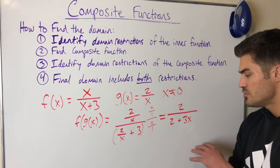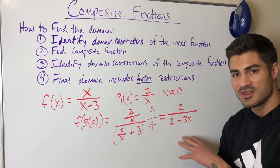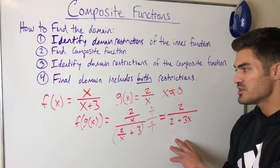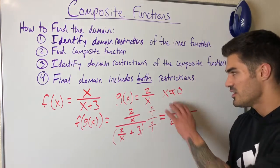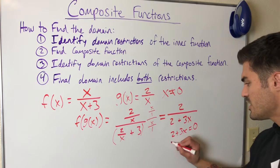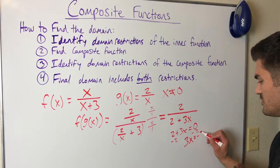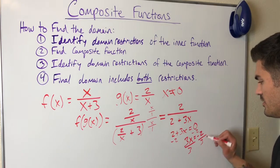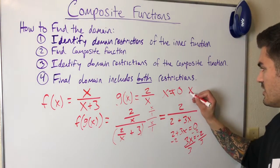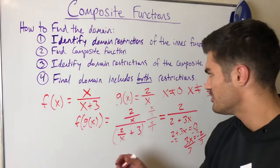So the composite function simplifies to 2 over (3x + 2). Now I potentially have zero in the denominator, so I set the denominator equal to zero and solve: 2 + 3x = 0, subtract 2 from both sides to get 3x = -2, then divide by 3 to get x = -2/3. So from the composite function, x cannot equal -2/3. Combined with the earlier restriction, x cannot equal 0 and x cannot equal -2/3.